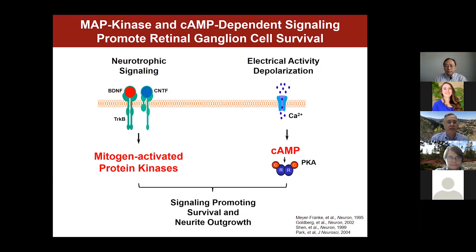Over the last 20 years, there's been much research, including work by the lab of Ben Barris here at Stanford, revealing how signaling pathways within retinal ganglion cells are required to maintain survival during conditions of stress. Two major pathways — mitogen-activated protein kinases activated by neurotrophic signaling, and cyclic AMP protein kinase A signaling downstream of electrical depolarization — both seem important for promoting survival and neurite outgrowth.